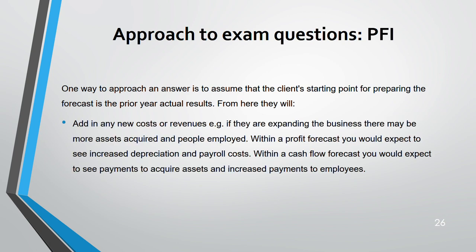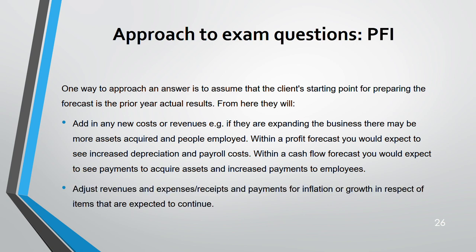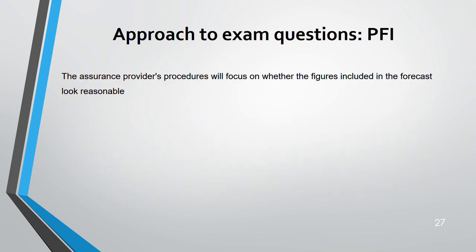New costs or revenues need to be added. For example, if expanding the business, you may need more assets and more people — more people means increased payroll costs, more assets means increased depreciation in a profit forecast. In a cash flow forecast, you will see increased payments to acquire assets and increased payments to employees as cash outflows. Revenues and expenses also need to be adjusted for inflation.